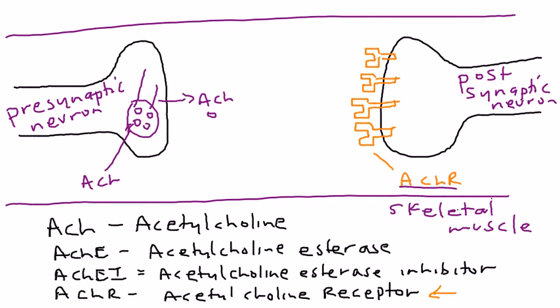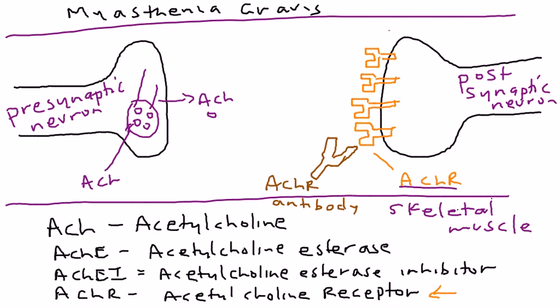Now, unfortunately, in myasthenia gravis, you have an autoimmune attack. What happens is you get these acetylcholine antibodies that come and block the acetylcholine receptors. These are the acetylcholine receptor antibodies. This acetylcholine receptor antibody prevents these acetylcholine molecules. So how do we go about helping this situation?